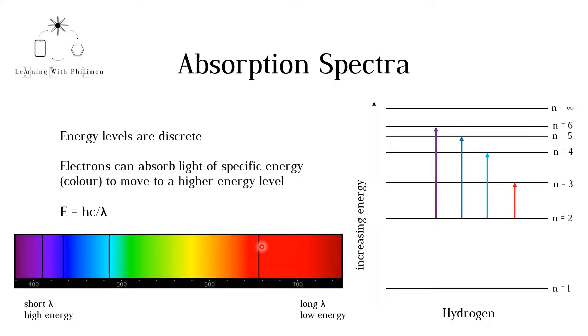Electrons could transition from the first energy level to higher energy levels, but this energy is not in the visible part of the electromagnetic spectrum.